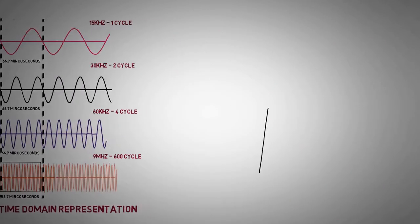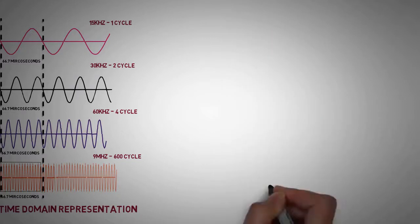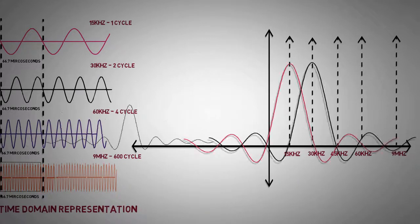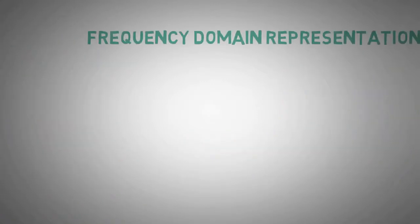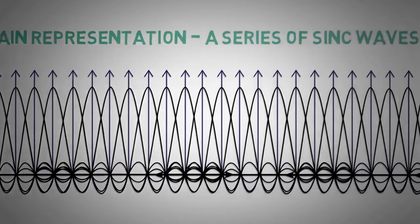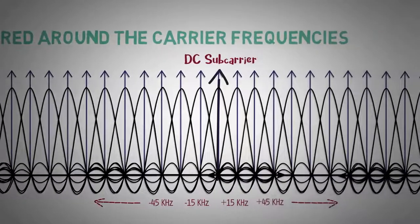As we know that a rectangular function can be represented in frequency domain as a sinc function which is centered around DC. When multiplying a signal to a carrier frequency in time domain, the signal will shift in frequency domain by the same amount of carrier frequency. Thus we can represent these modulated sub-carriers in frequency domain as a series of sinc waves centered around the carrier frequencies.